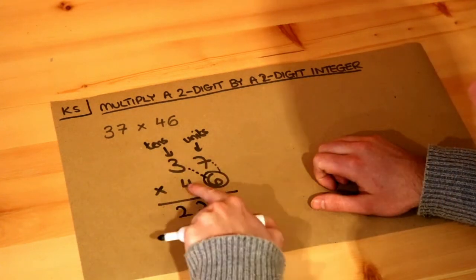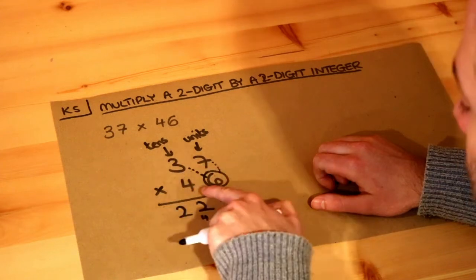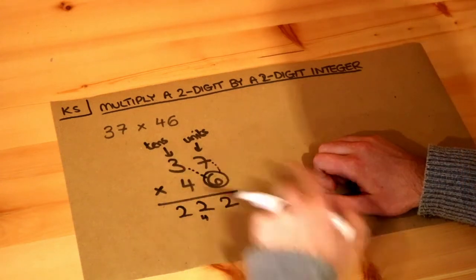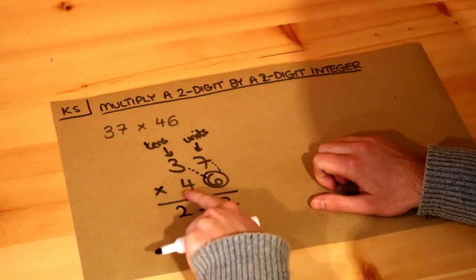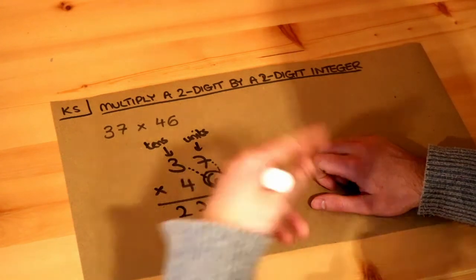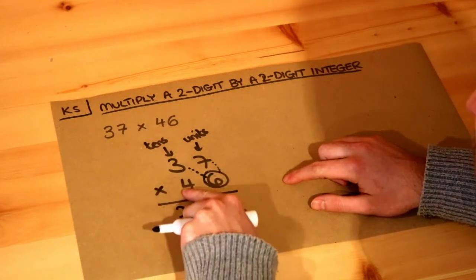Now we need 40 lots of 37. Because this is a tens digit, we have 40 lots of 37. We can do 4 lots of 37, but if we want 40 lots we're going to get a 0 at the end, so when multiplying by this next digit, you put a 0 at the end.